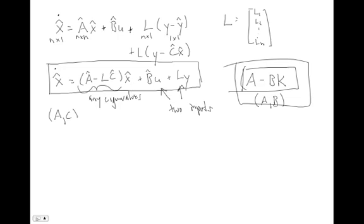Let's look at the benefits of this closed-loop observer. I've established that I can make it have any eigenvalues I want, but I haven't proven that's particularly useful. So let's consider a new variable: error, defined as the difference between our actual state vector and our estimated state vector. A perfect observer would have error equal to zero for all time. We want this error to be as small as possible, and ideally, any initial error decays away to zero as time goes on. We can take the time derivative: error-dot equals x-dot minus x-hat-dot.